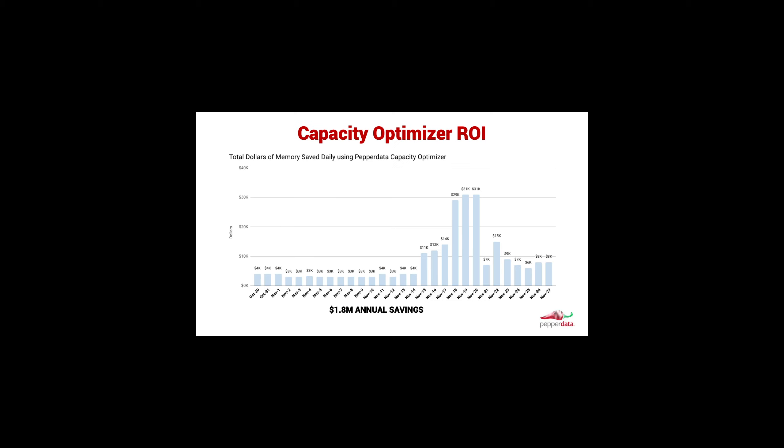The ROI that you get from Capacity Optimizer can be measured in real dollars. This example is from a cluster running over a thousand nodes. The $1.8 million in annual savings represents how much money this shop would have had to spend to get the memory that would have been wasted. As their workloads peaked around the holiday period, they would have had to add roughly $30,000 worth of hardware to get the same work done. With Capacity Optimizer, this all takes place automatically — without tuning jobs or adding any auto scaling. The existing hardware was just capable of doing a lot more work.